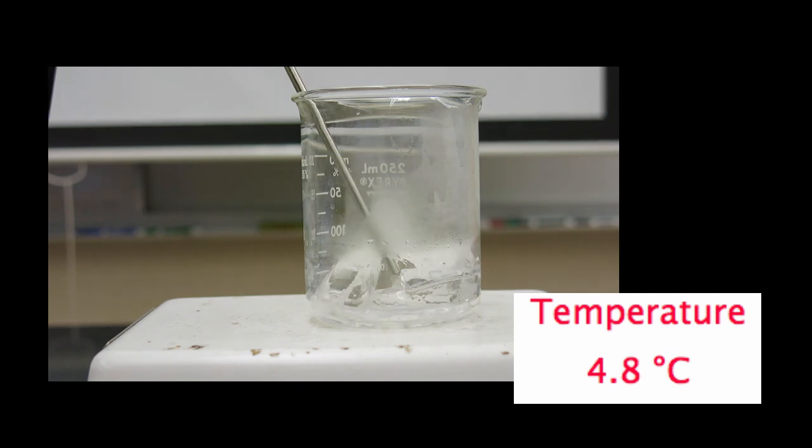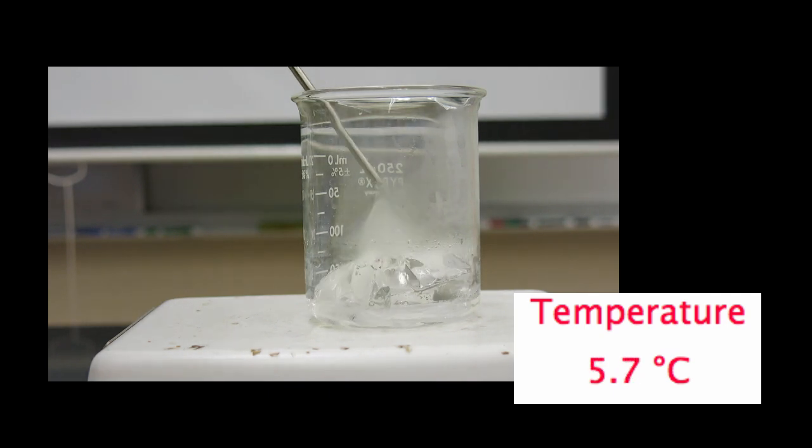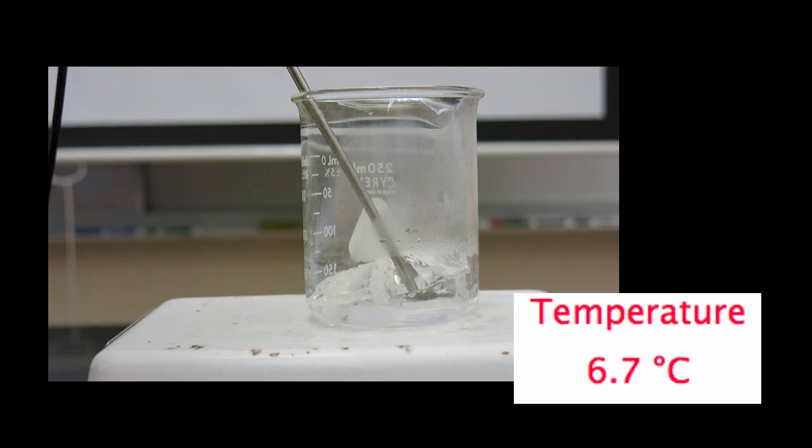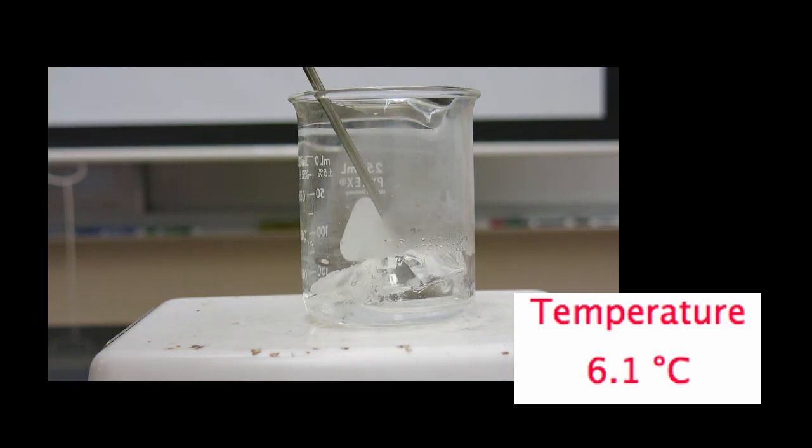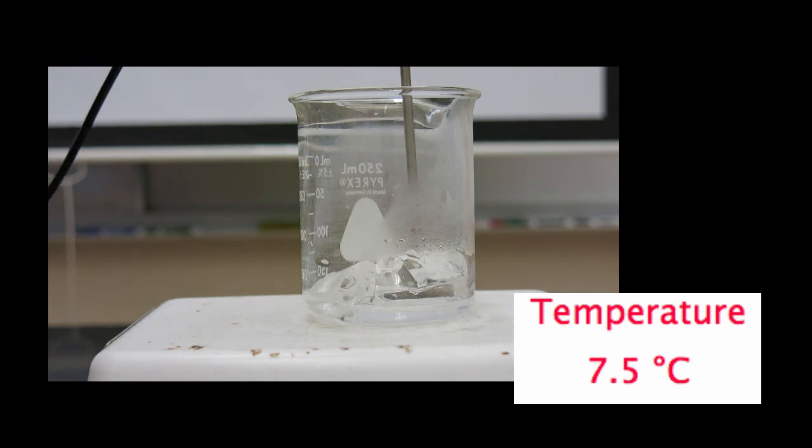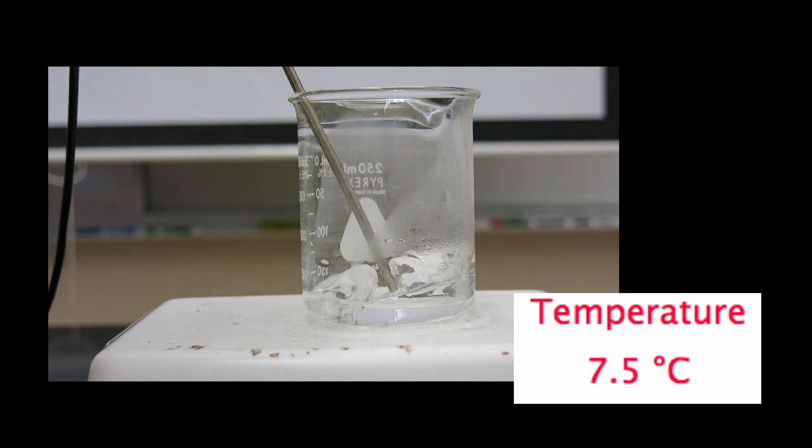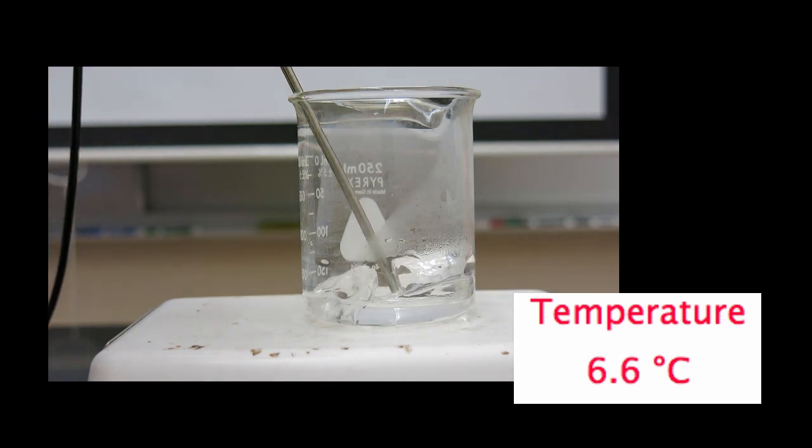We put the ice on a hot plate to add some thermal energy, or heat energy. As we heat the ice, that's going to cause the particles in that solid to vibrate faster and faster, and eventually they'll break free of their fixed positions and change into a liquid.